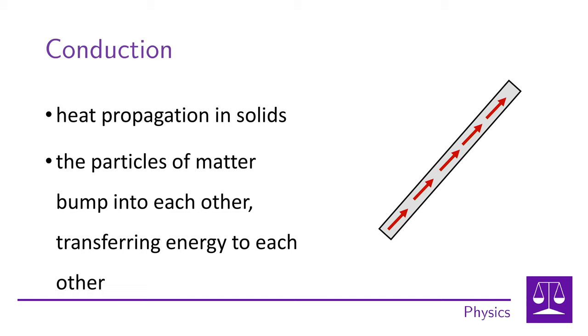Materials with high thermal conductivity, such as metals, transmit heat well, while insulators such as wood or polystyrene are poor conductors of heat.